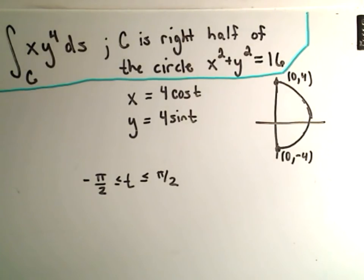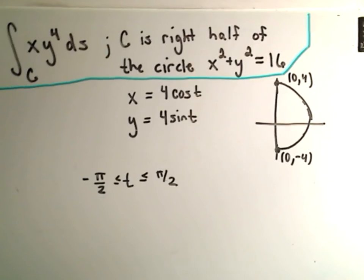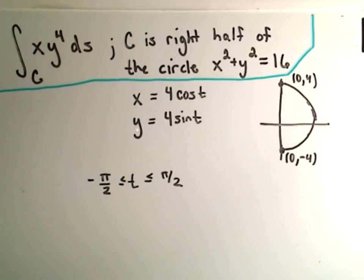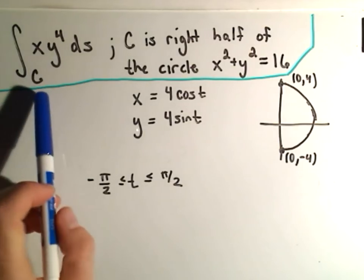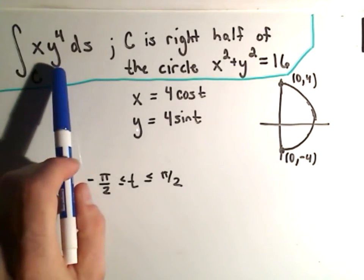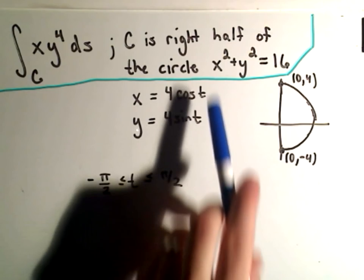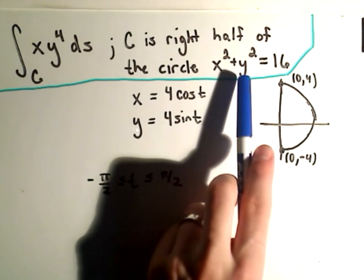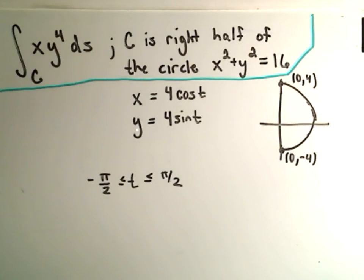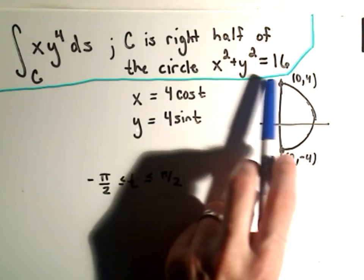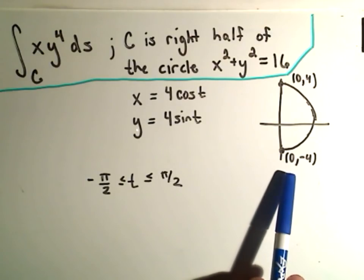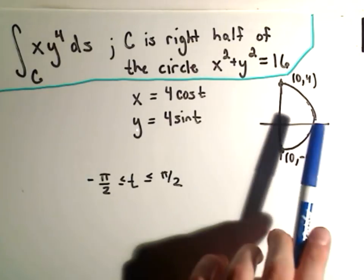So here's an example that I thought was pretty decent. It says we're going to integrate the function xy^4 over this curve C. And C's going to be the right half of the circle x^2 + y^2 = 16. So x^2 + y^2 = 16, that's just a circle of radius 4, so that's what I have here. But again, we're just doing the right half of it, so we're going to be going from (0, -4) to (0, 4).